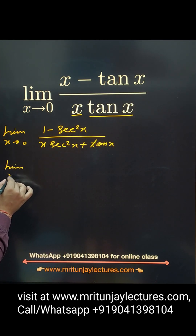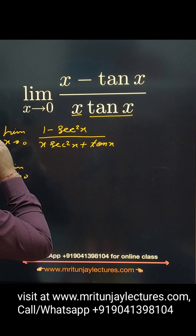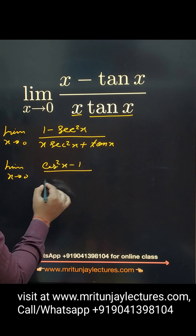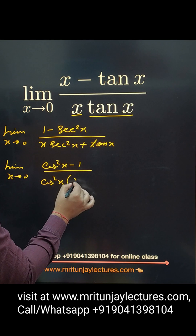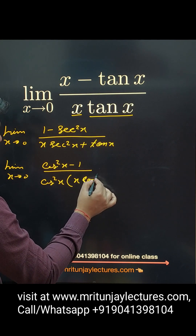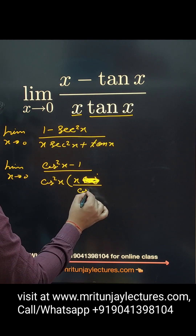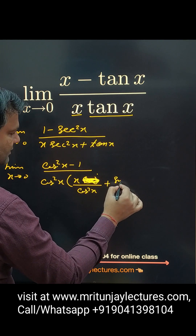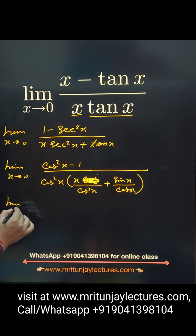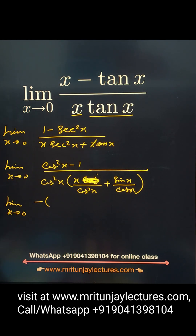Now limit x tends to 0: numerator is 1 minus sec²x. Since sec²x equals 1/cos²x, we can write the numerator as (cos²x minus 1) upon cos²x. Using the identity, 1 minus cos²x equals 2·sin²(x/2). So the numerator becomes negative 2·sin²(x/2).